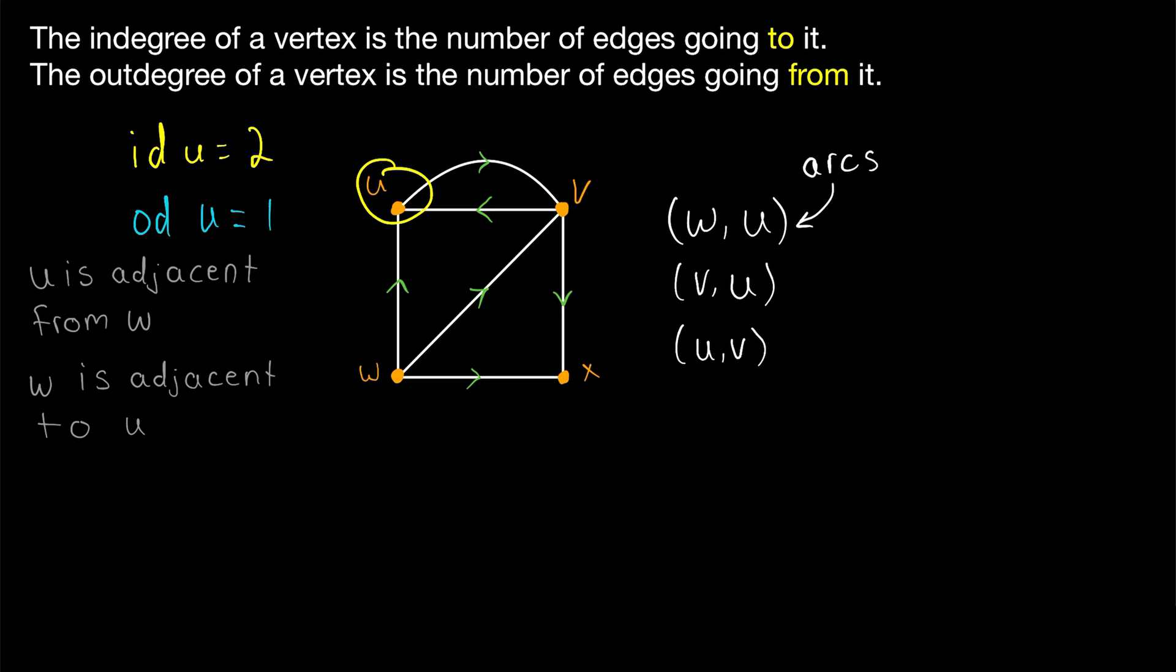Now let's go ahead and label the in-degree of U right next to it in yellow. So we'll write two there, and we'll label the out-degree in blue, which is one. Take a minute yourself to look at the other three vertices and identify their in-degrees and out-degrees. Have you done it? Let's go through and label them.